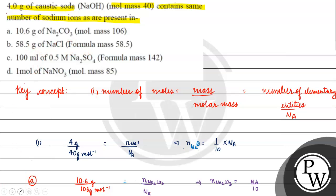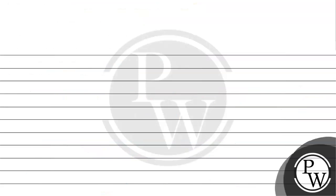Option D: 1 mole of NaNO₃. One mole of NaNO₃ gives 1 mole of Na⁺ ions, which equals Avogadro's number of sodium ions. This does not equal N_A/10, so Option D is also incorrect.